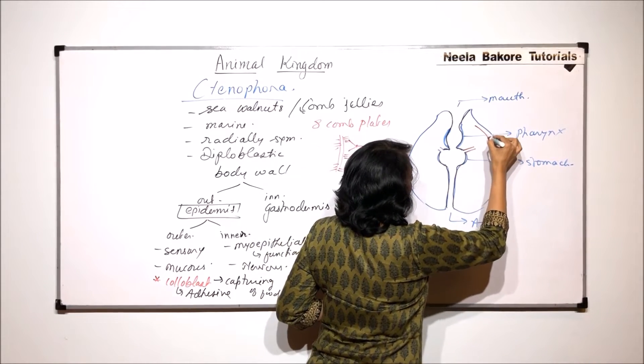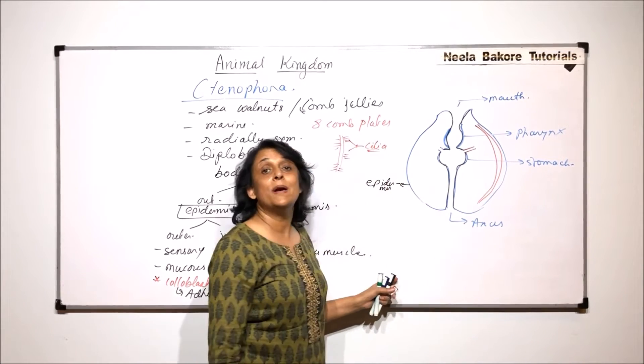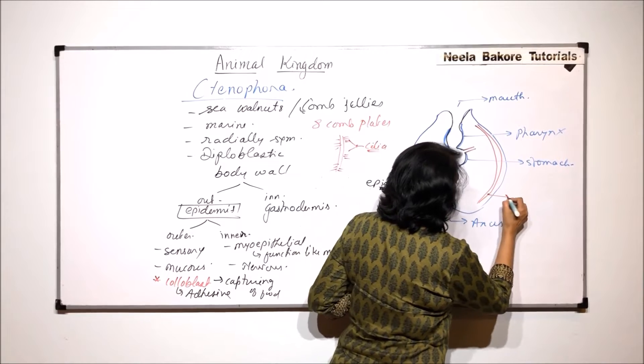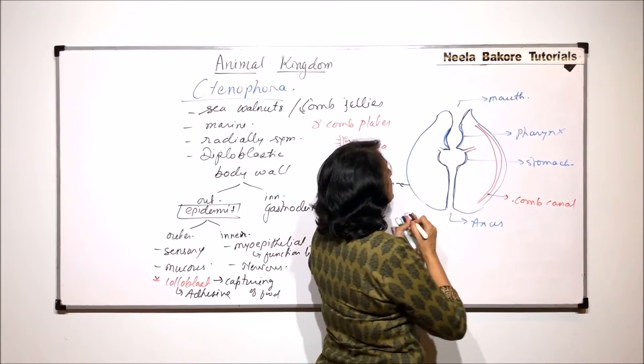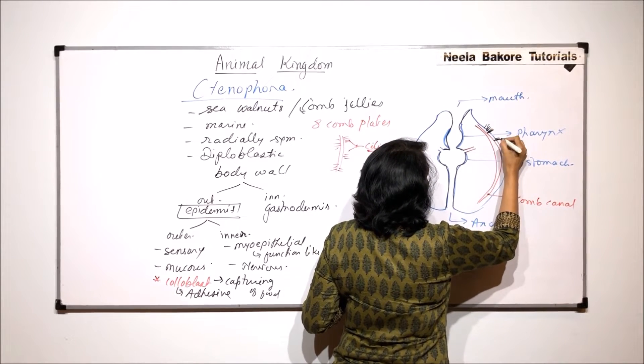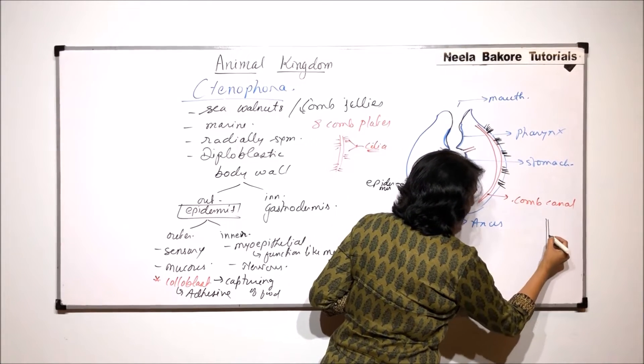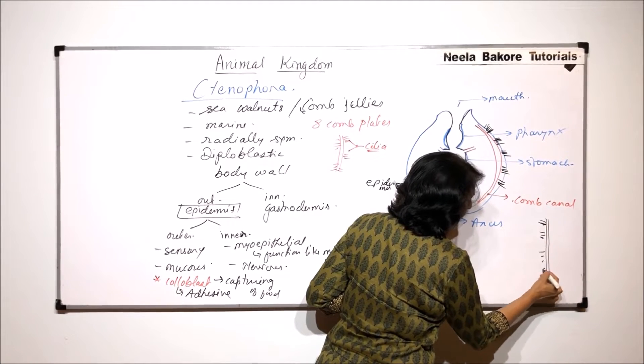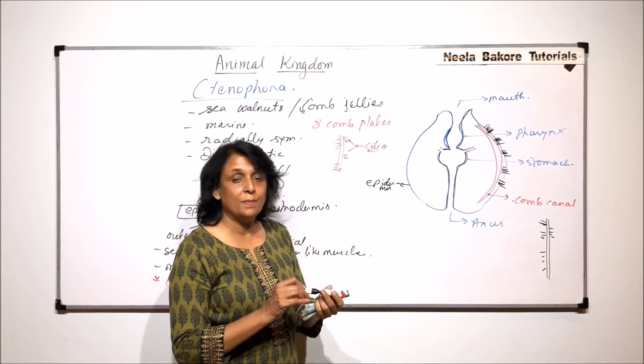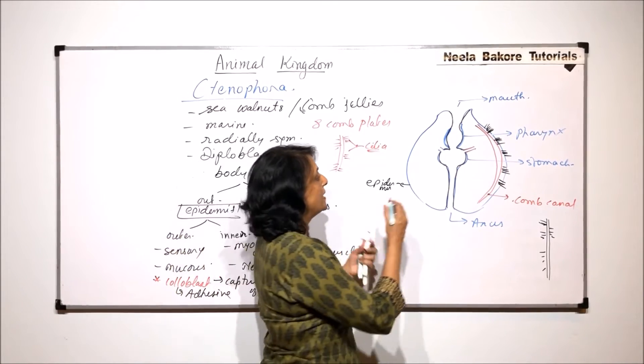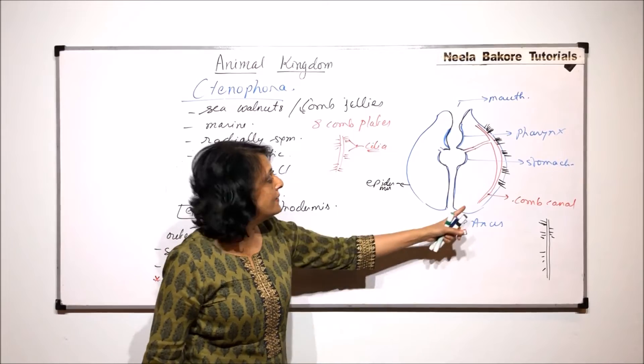We will talk about these cilia also in some time. So we are talking about this gastrodermis. This gastrodermis gives rise to some canals and these canals go to various parts. This is a comb canal. And all along this comb canal there would be these cilia. If we see from outside, this is the comb canal and on either side there are these cilia. That means from the gastrodermis there are cells which are present in this lining.